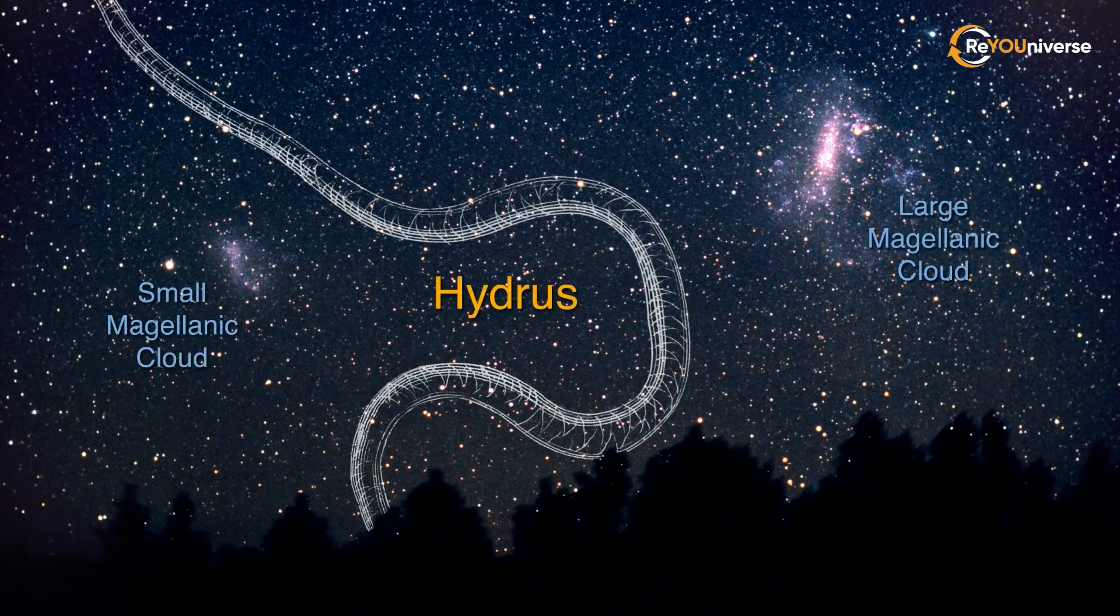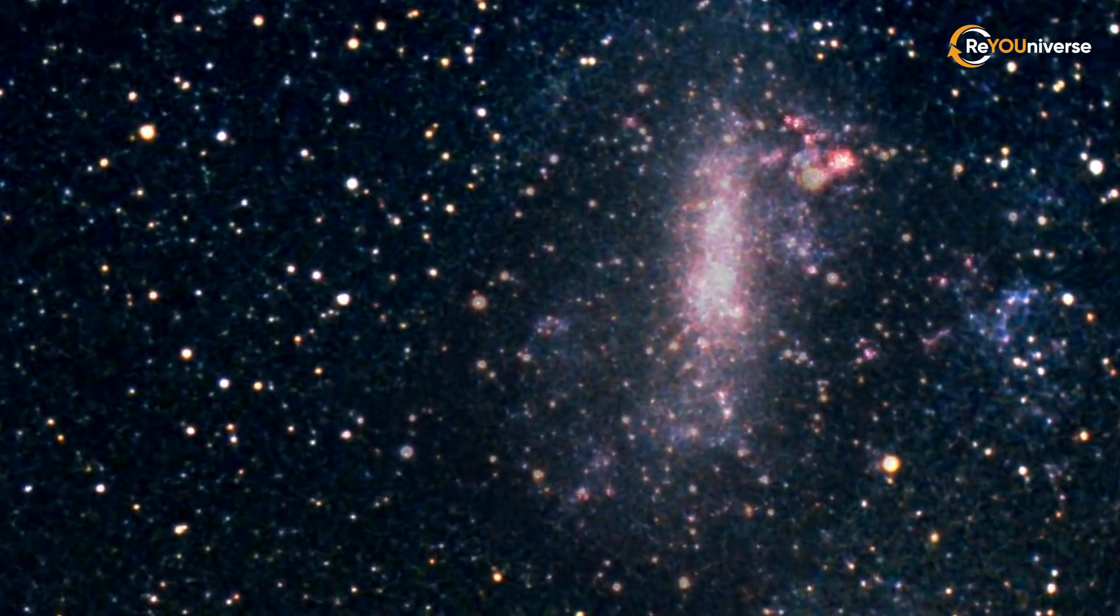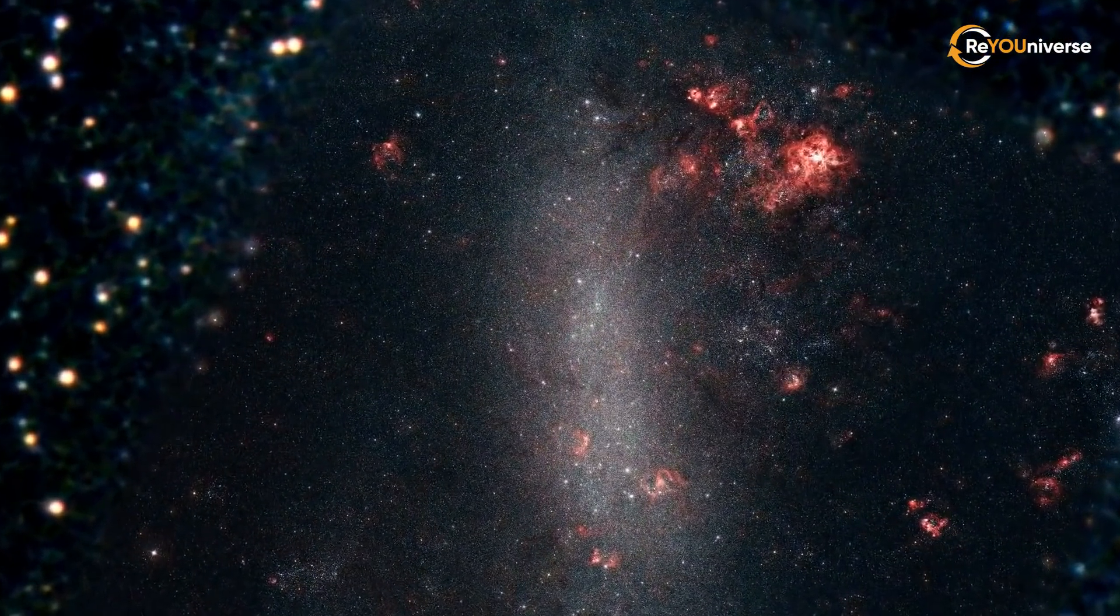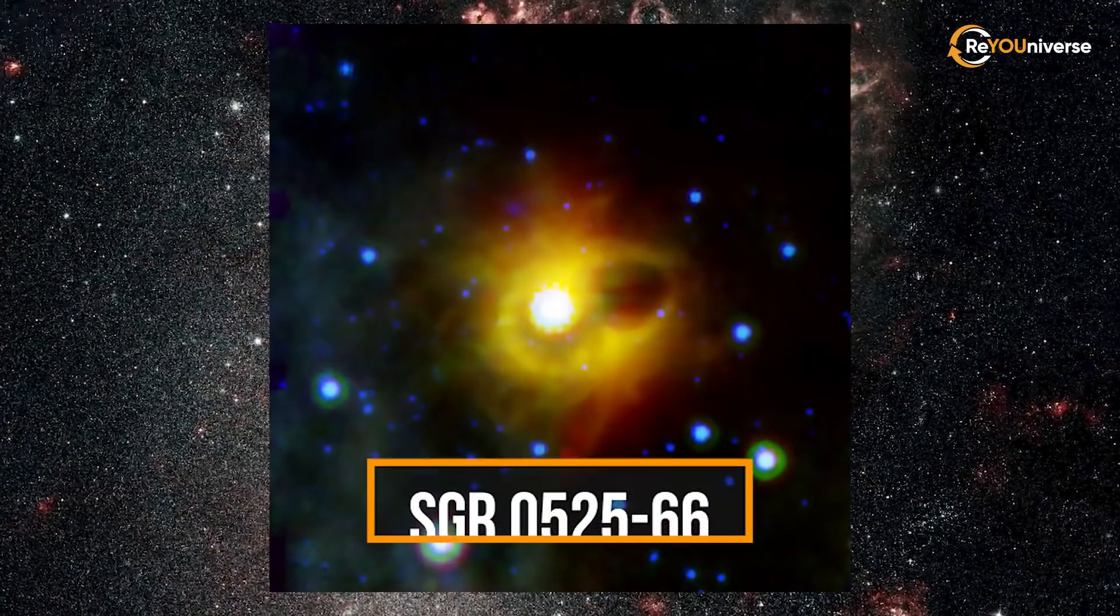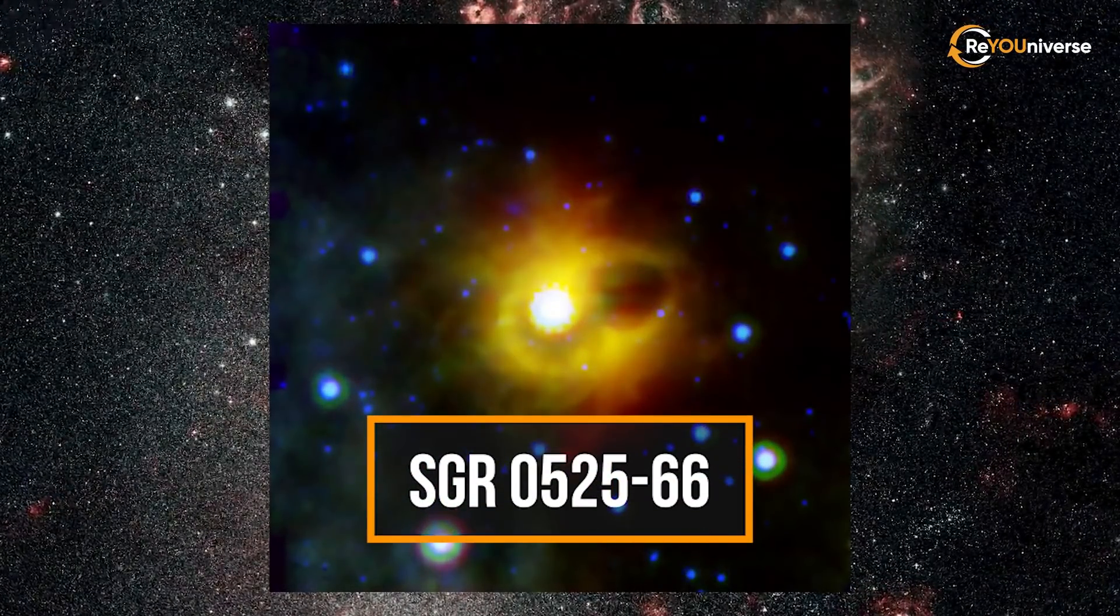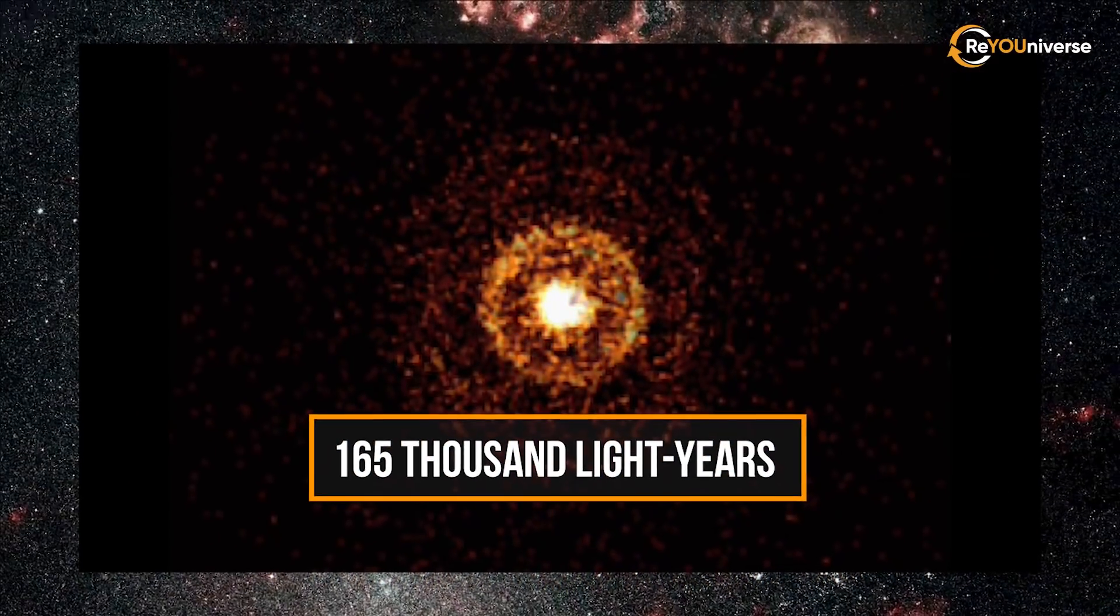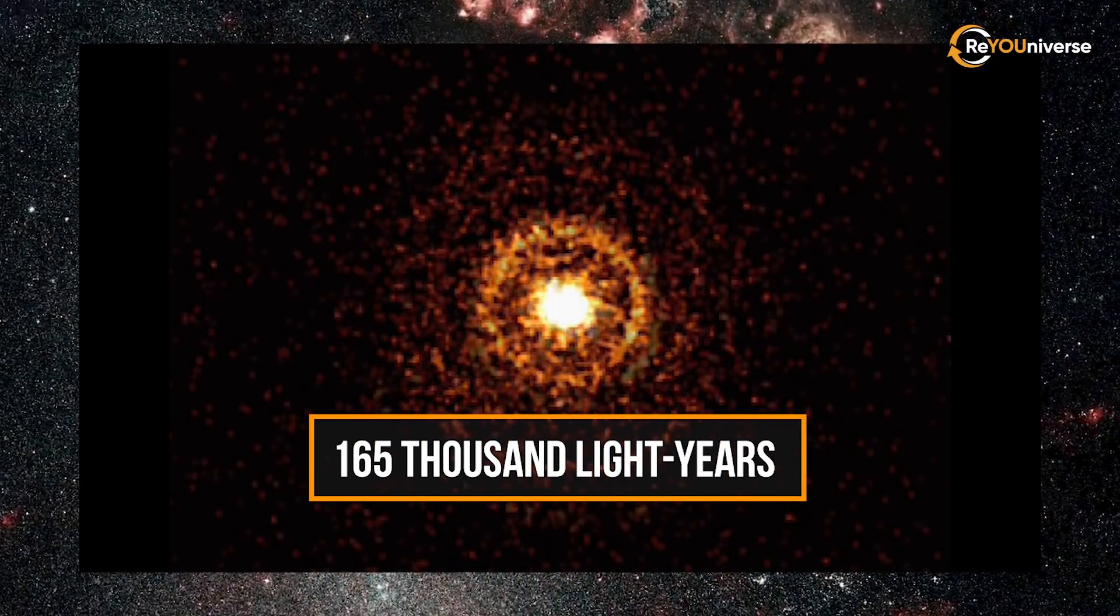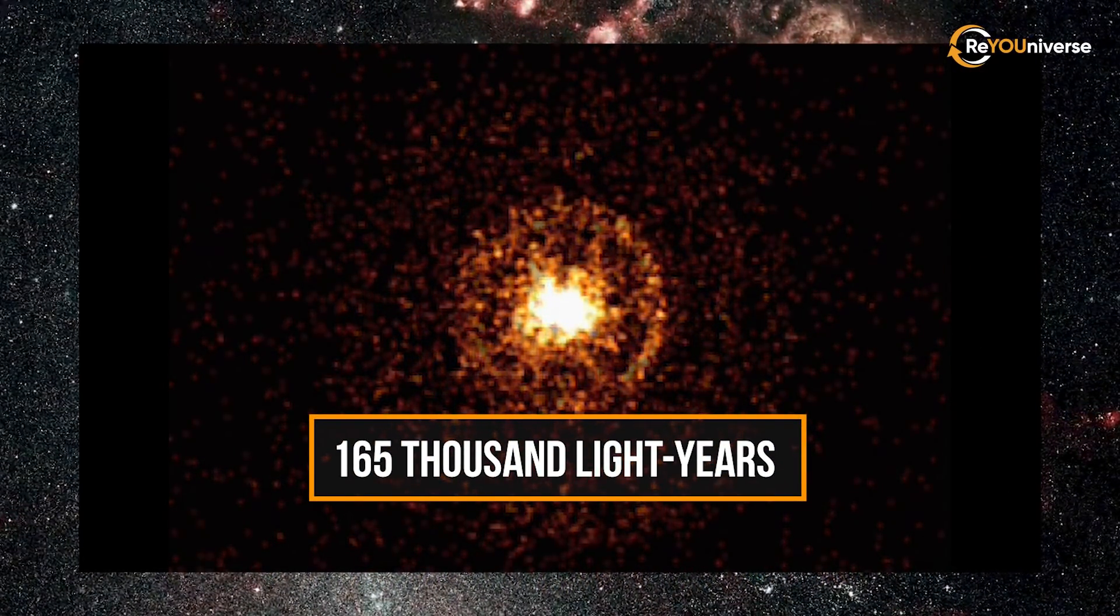It turned out to be the remnants of a massive star in the large Magellanic Cloud, which exploded in a supernova around 3000 BC. The object was named SGR 0525-66. A distance of only 165,000 light-years saved humanity from some big trouble.